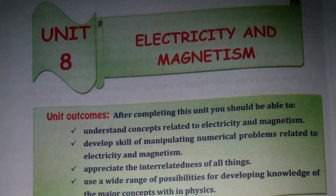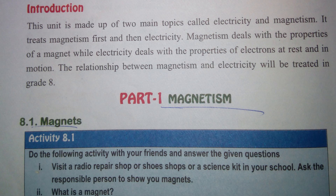Unit: Electricity and Magnetism - Introduction. This unit is made up of two main topics: electricity and magnetism. It treats magnetism first and then electricity. Magnetism deals with the properties of a magnet.